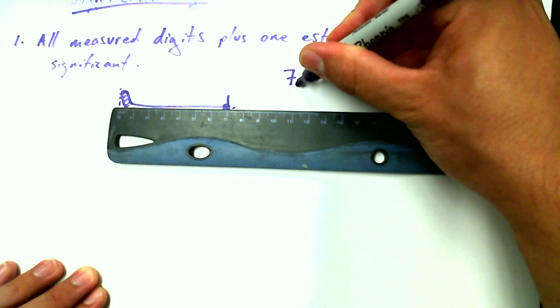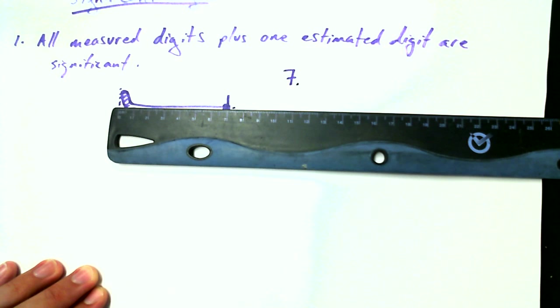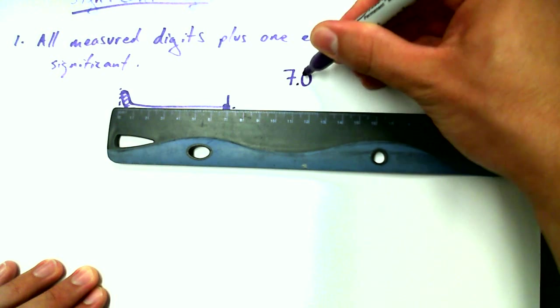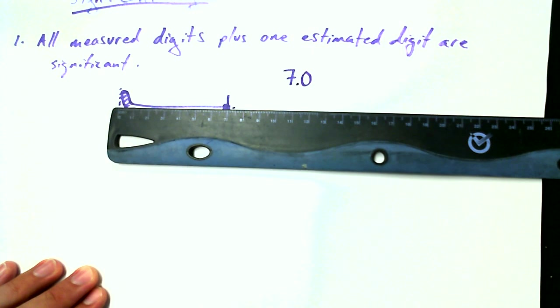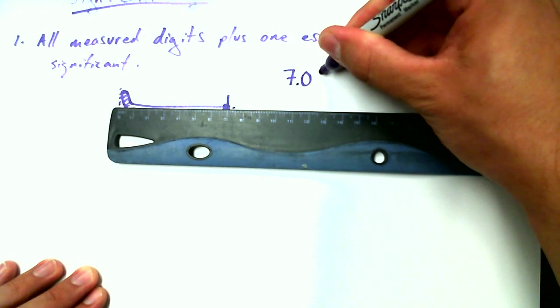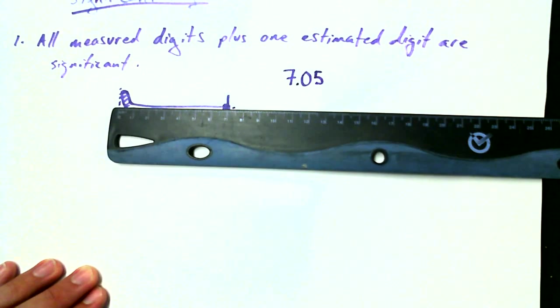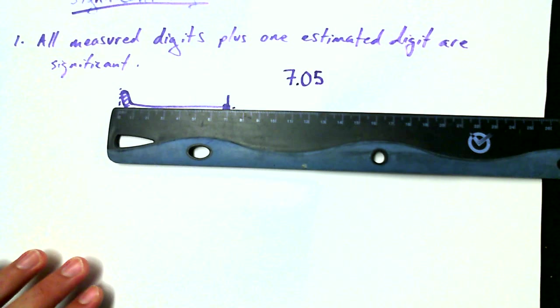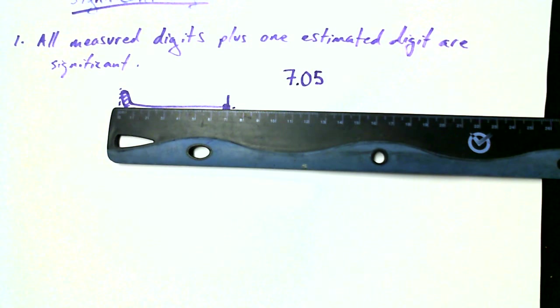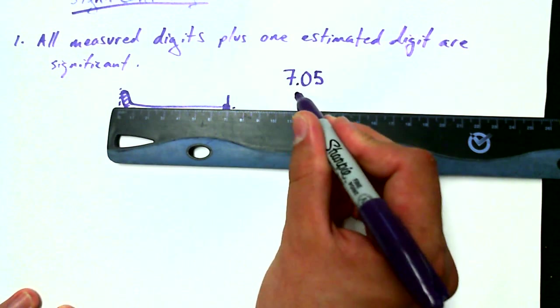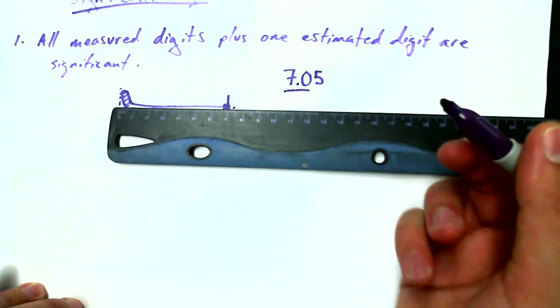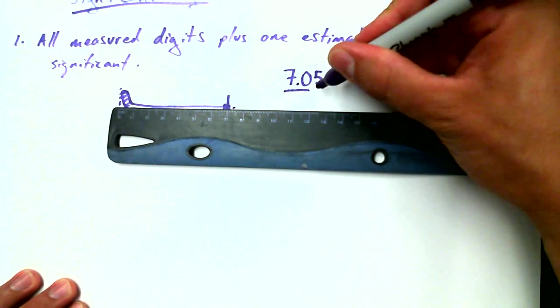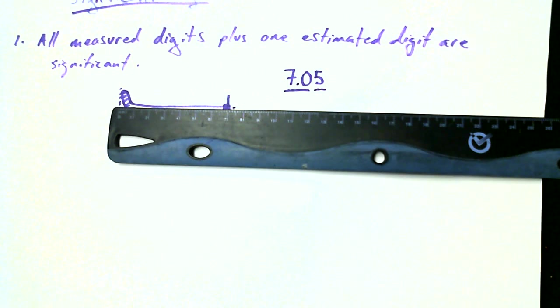So I can say it's at least seven centimeters, but it's a little bit more than seven centimeters. I would say it's not quite 7.1 centimeters. So I can't say that it's 7.1. It's about halfway in between 7.0 and 7.1. So I could say 7.0 for sure, not exactly. So I would estimate that it's 7.05 centimeters long.